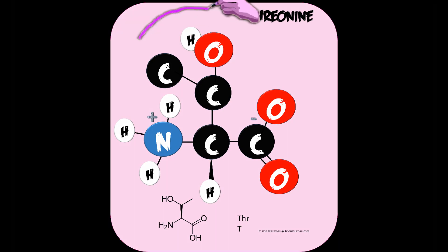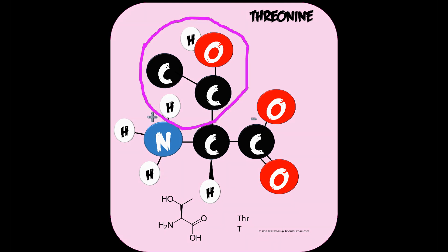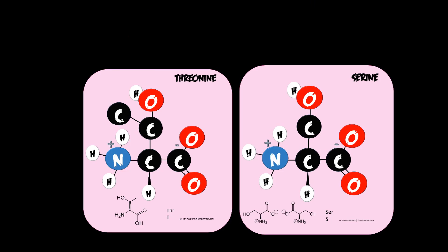Threonine has, on the beta carbon, a methyl group and a hydroxyl group attached. The hydroxyl can participate in hydrogen bonds. The only difference between serine and threonine is the additional methyl group on the beta carbon of threonine.